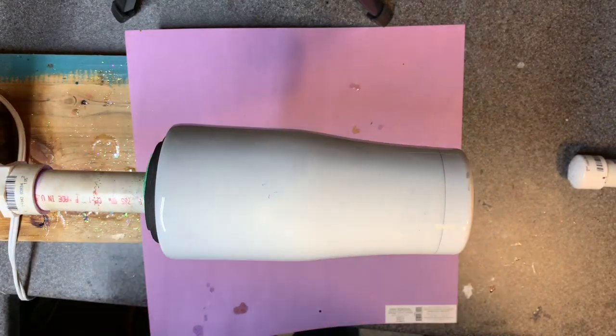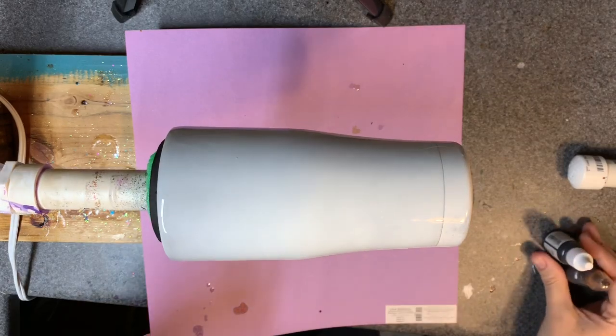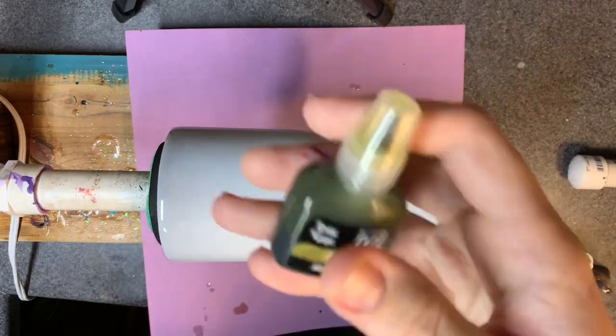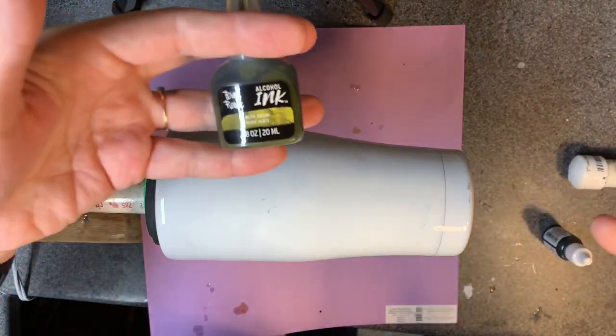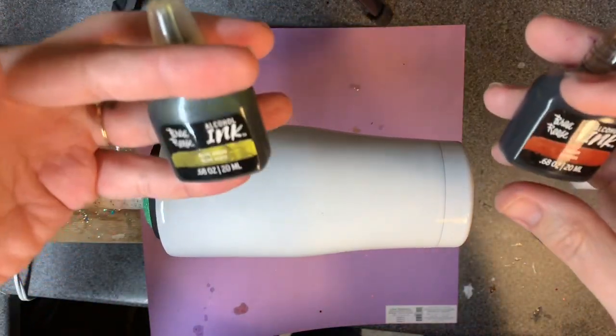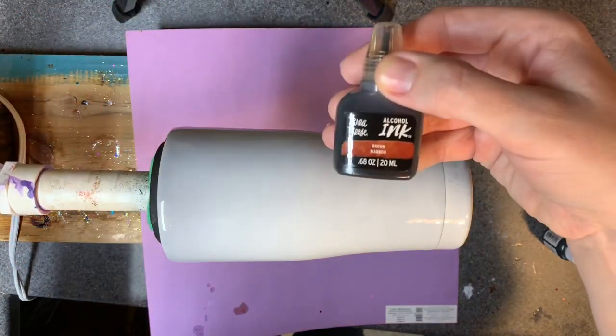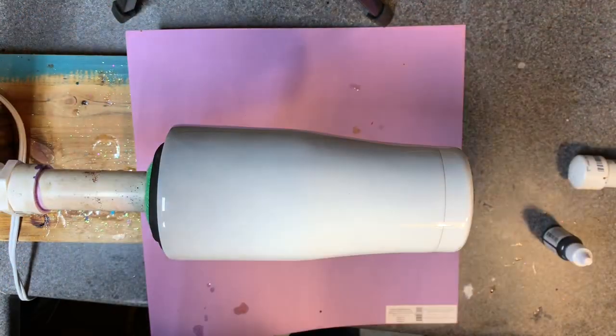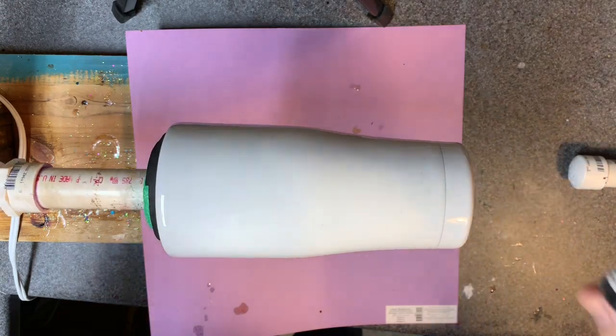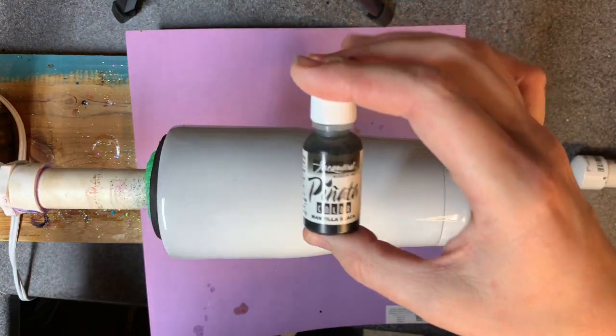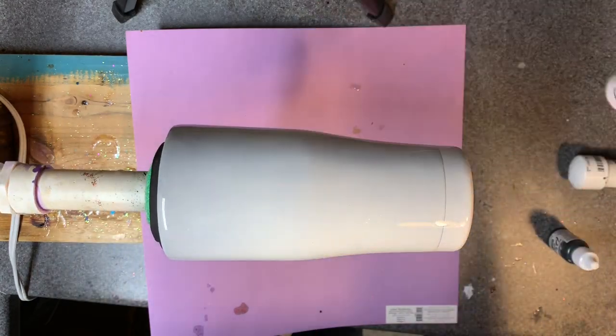Hi there, in this video we're going to attempt a camo alcohol ink swirl. I'm going to use a couple of different colors: olive green from Brea Reese in a three-pack, brown also available in a three-pack but I typically buy this as a single at Hobby Lobby, and then Pinata black. I'm still on the fence, I may throw in some white just to make a few lighter spots but I'm really not sure.